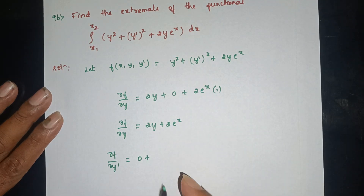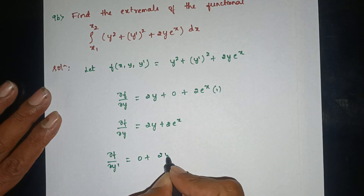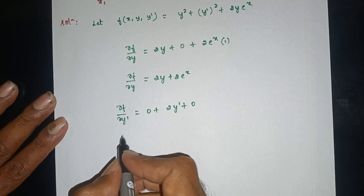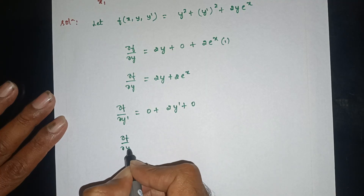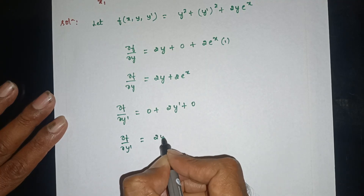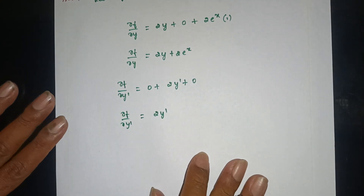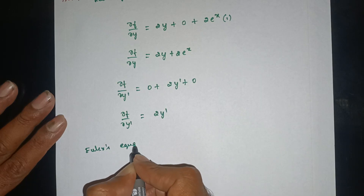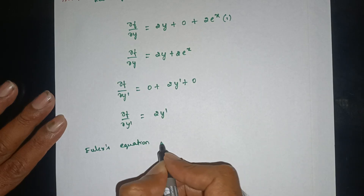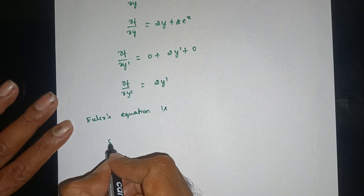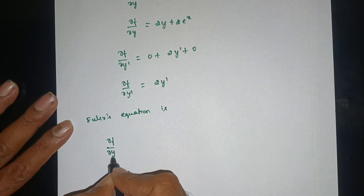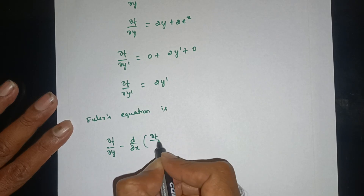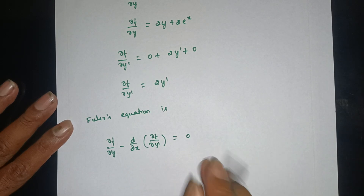Differentiating f with respect to y-dash: y-dash squared gives 2y-dash. So dou f by dou y-dash is equal to 2y-dash. The Euler-Lagrange formula is dou f by dou y minus d by dx of dou f by dou y-dash equals zero.